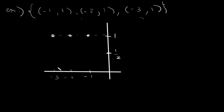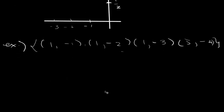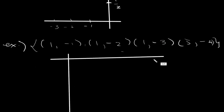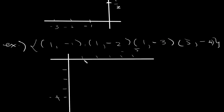For the third example {(1,-1),(1,-2),(1,-3),(5,-4)}, the points fall mainly in the fourth quadrant. We set up x going to 5 and y going to -4, and plot the points: (1,-1), (1,-2), (1,-3), and (5,-4). That's your graph — you just simply need to plot the points.